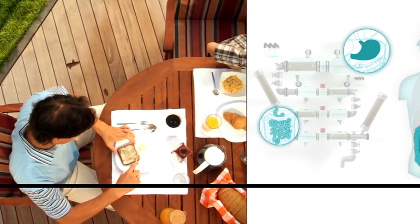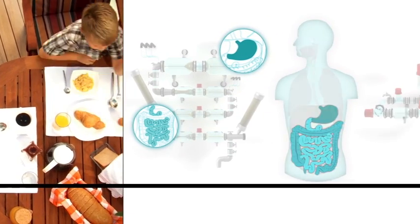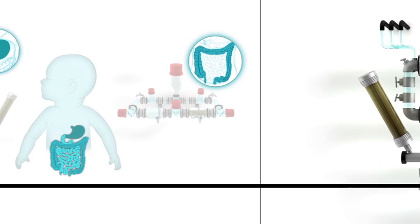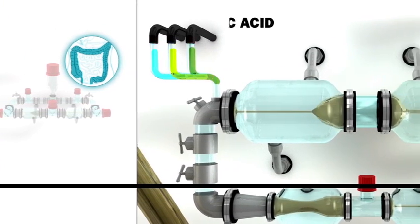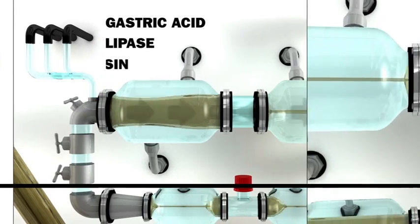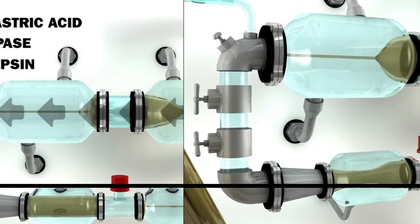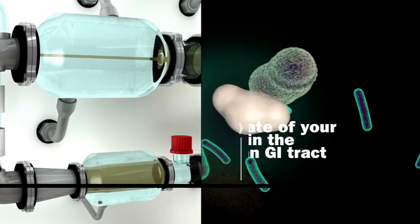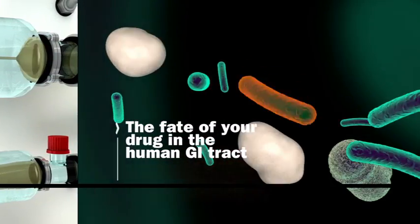We have shown you an active model of the human gastrointestinal tract within a laboratory setup. We can perform research on how, where and when a drug becomes available for absorption in our body. This model can help you accelerate your research on the fate of your drug and formulation in the human gastrointestinal tract.